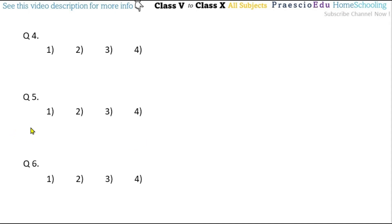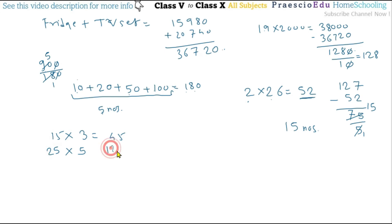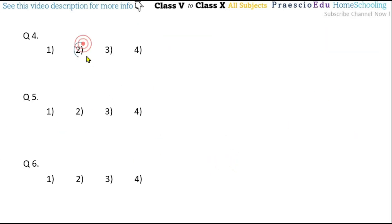Question number four: Nandita bought 3 mangoes at rupees 15 each and 5 pineapples at rupees 25 each. She gave the fruit seller 2 notes of rupees 100. So 15 multiplied by 3 equals 45 rupees for mangoes, and 5 multiplied by 25 equals 125 rupees for pineapples. Total purchase is 45 plus 125 equals 170 rupees. She gave 200 rupees, so 200 minus 170 equals 30 rupees back. This is option number two.